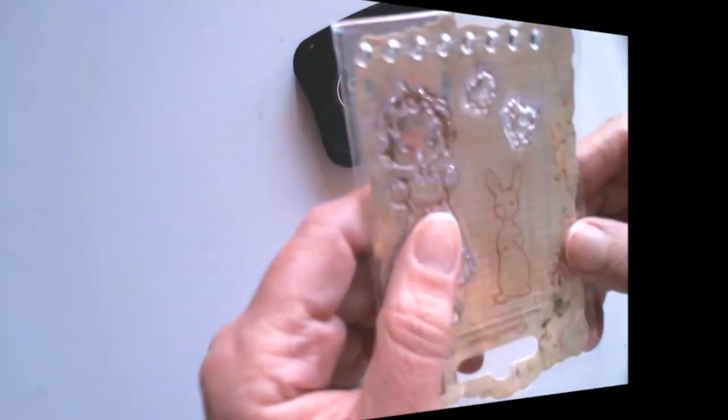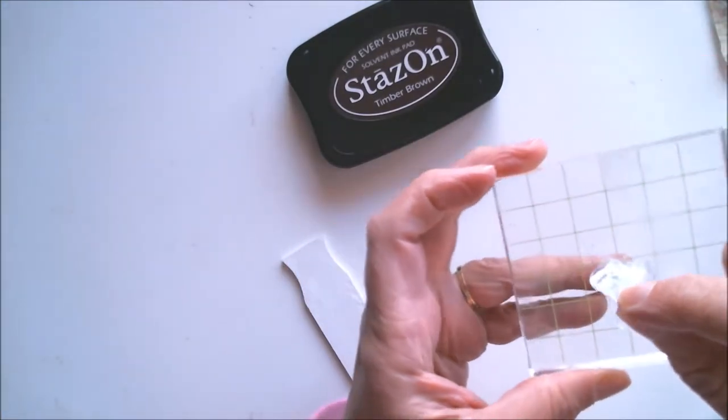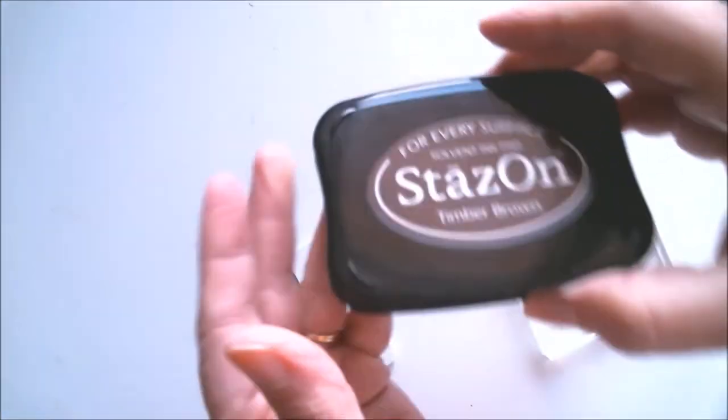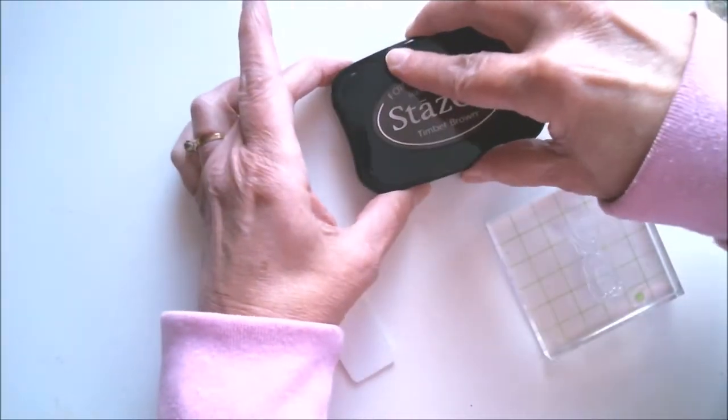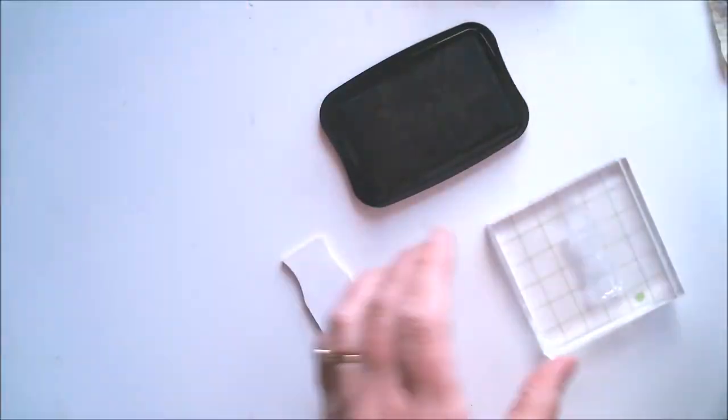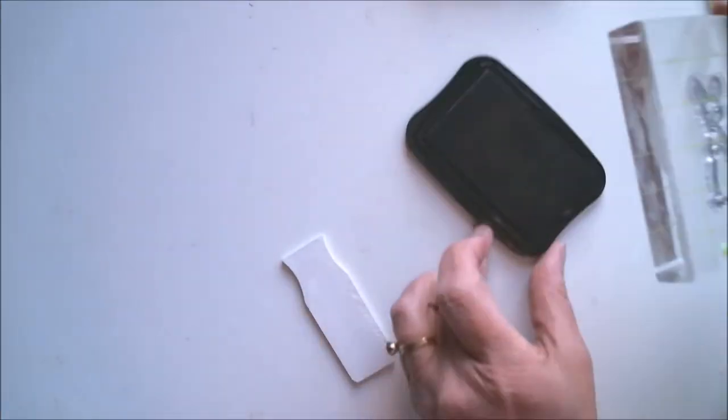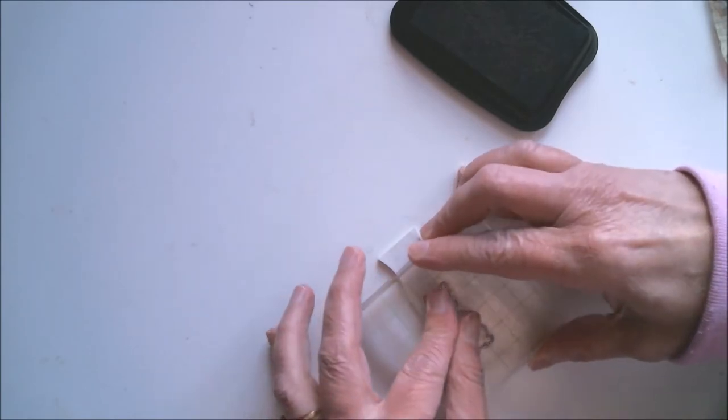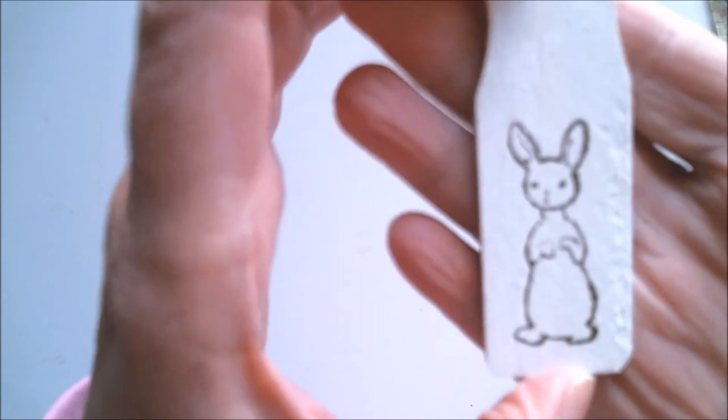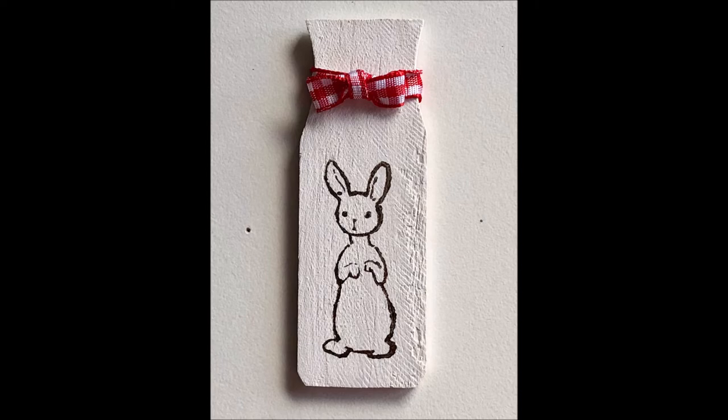For this next one, I'm going to be stamping a cute little bunny rabbit on the front using Stazon ink in Timber Brown. Stazon is a fast drying archival ink that is appropriate for all surfaces. I love that stamping isn't just for cards, but for home decor projects as well. By putting the stamp on a clear acrylic block, I can see exactly where I'm stamping. I love how that came out. Isn't that just adorable and perfect with that little red checkered ribbon.